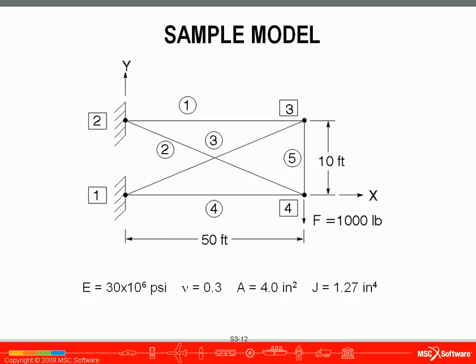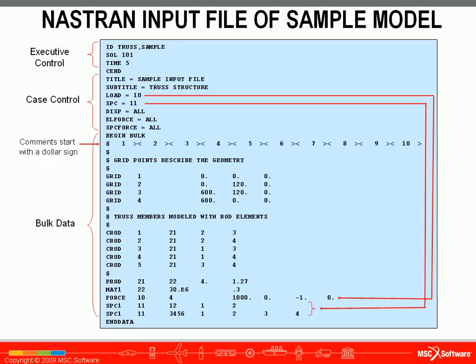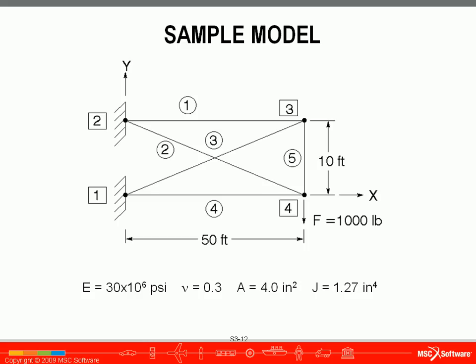Here we have a sample model — a simple model with 4 nodes and 5 elements, particular loading, and material properties. We can create a NASTRAN input file to represent this situation. The executive control section specifies a solution 101 linear static analysis. We go into case control with titles, then define loads and boundary conditions. Following the arrows, load 10 defines force 10, applied at node 4 with 1,000 pounds in the negative Y direction.